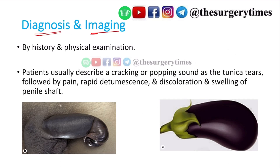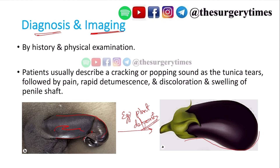Diagnosis is made by history and physical examination alone. The patient will describe a cracking or popping sound — due to the tunical tear — followed by pain, rapid detumescence, discoloration, and swelling of the penile shaft. The penis becomes bent. This classic deformity is known as the eggplant deformity — a very important term that has appeared in INICET and NEET examinations.